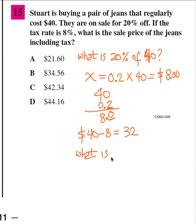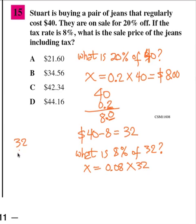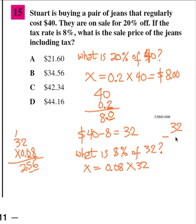What is 8% of 32? That's 32 times 0.08: 8 times 2 is 16 carry 1, 8 times 3 is 24 plus 1 is 25. With 2 decimal places, that's 2.56. So 32 plus 2.56 equals 34.56. The answer is B.